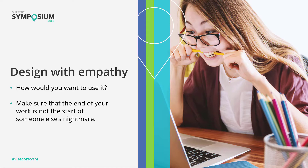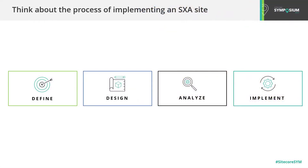I'm sure you've already built many websites. Some of you might only have been involved in a new project. Some may have experienced the joys of supporting someone else's creations. Every SXA implementation has different requirements. However, one thing that all SXA implementations have in common is that the whole process of building an SXA site can be divided in four steps: Define, Design, Analyze, and Implement.